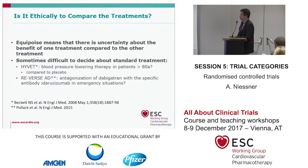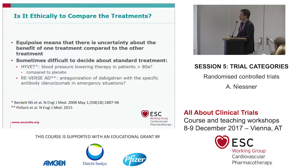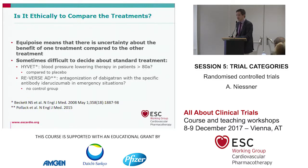A second difficult decision was the antagonization of dabigatran with a specific antibody called idarucizumab in emergency situations. The question was what to do with the control group — give them placebo or coagulation factor concentrates. The final decision was to have no control group, which I still think is a pity because the evidence is not strong without any control group.